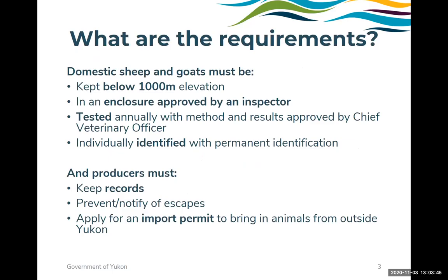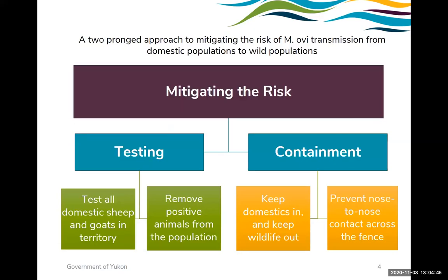The Control Order area is defined as the entire territory. The requirements are that domestic sheep and goats must be kept below 1,000 meters elevation in an enclosure approved by an inspector, and must be tested annually with method and results approved by the chief veterinary officer. Each animal must be individually identified with permanent identification. Producers must keep records, prevent and notify of any escapes, and must apply for an import permit if they desire to bring animals in from outside the territory. The goal is to protect our wildlife from respiratory pathogens carried by domestic animals, with the pathogen of greatest concern being Mycoplasma ovipneumoniae (MOV).